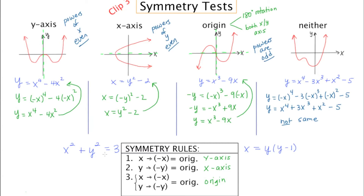I'll conclude with two more examples. Once you do a few practices, you can look at a function and reason your way through it without doing the full test. Looking at this one, since all the powers are even, replacing x with negative x and y with negative y will just turn everything back to what it was. Sure enough, negative x squared becomes x squared and negative y squared becomes y squared — the result is exactly what we started with, confirming origin symmetry.